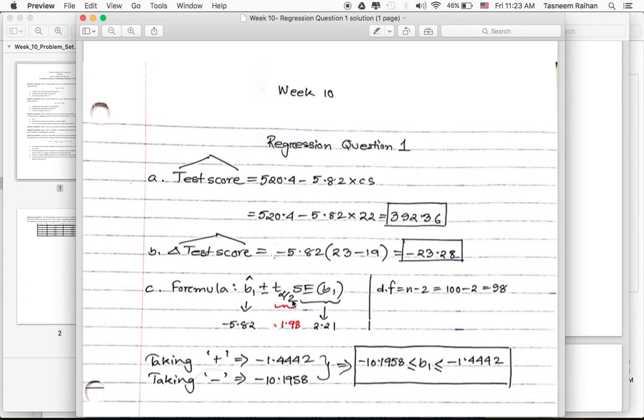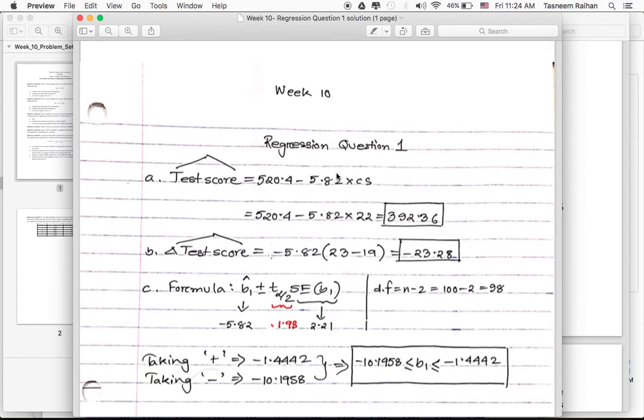Let's figure out the value of T alpha over 2. Alpha here is equal to 5% because it's a 95% confidence interval. Therefore, alpha equals 5%, and 5% divided by 2 is 2.5%, which means 0.025. Let's have a look at the T table.